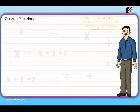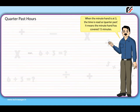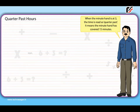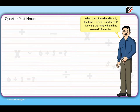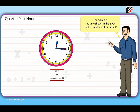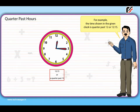When the minute hand is at 3, the time is read as 'quarter past.' It means the minute hand has covered 15 minutes. For example, the time shown in the given clock is quarter past 12, or 12:15.